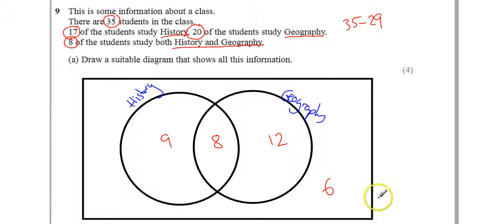Now, we call this set, if you want to be really frank, we call this set the universal set. It contains everything. Everything that's not in history or geography. Okay? So, that's how you draw it. So, there's the 4 marks. We'll have a look in a minute at where the marks come from.